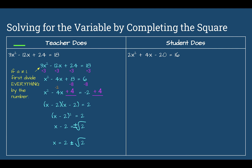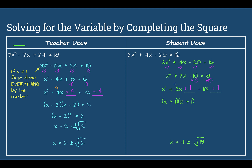Let's check. You should have got negative 1 plus or minus the square root of 19. First, a is not 1, so divide everything by 2 to get x squared plus 2x minus 10 equals 8. Then add 10 to both sides. Fill in the blank: half of 2 is 1, so 1 times 1 is 1. Add 1 to both sides: x plus 1 times x plus 1 equals 19, so x plus 1 squared equals 19. Take the square root: x plus 1 equals the square root of 19. Subtract 1 from both sides: negative 1 plus or minus the square root of 19.